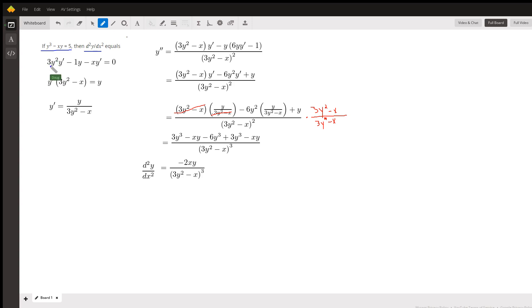Derivative of y cubed is 3y squared y prime. Then for this second term we need to use the product rule. So the derivative of the first is minus 1 times the second is y plus the first times the derivative of the second.